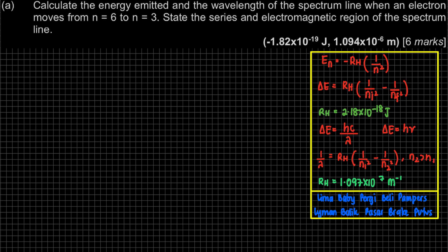The last formula you have to memorize is 1/λ = RH. In this case, your Rydberg constant won't be 2.18×10⁻¹⁸ joules. Based on your list of constants, there are two Rydberg constants. For this one, you're going to take the unit per meter, because remember it's 1 over wavelength — that's why per meter. The value is also different: 1.097×10⁷.